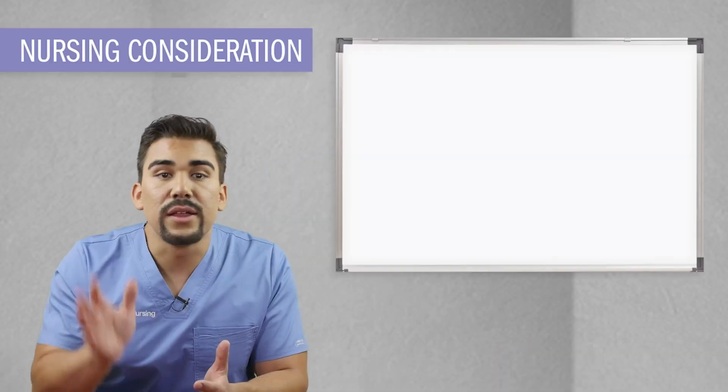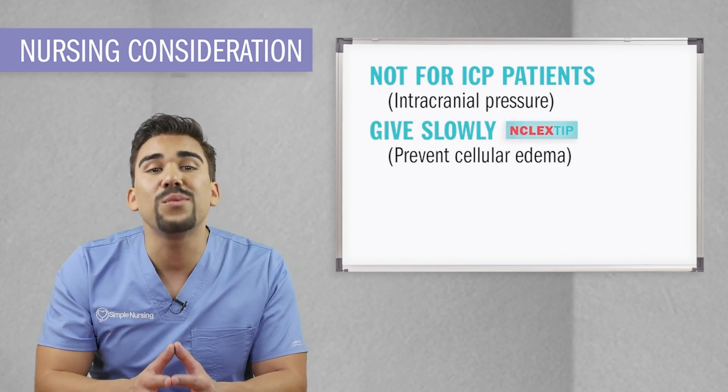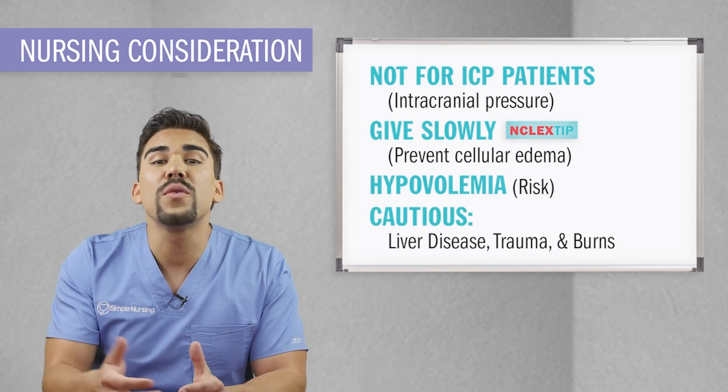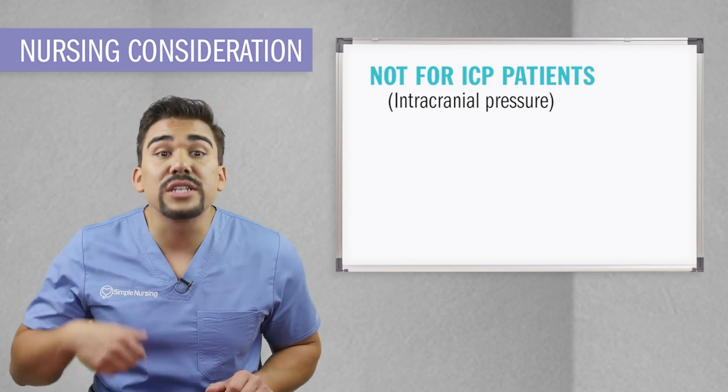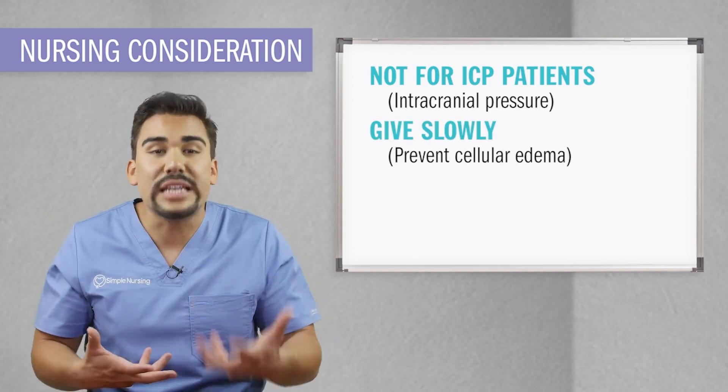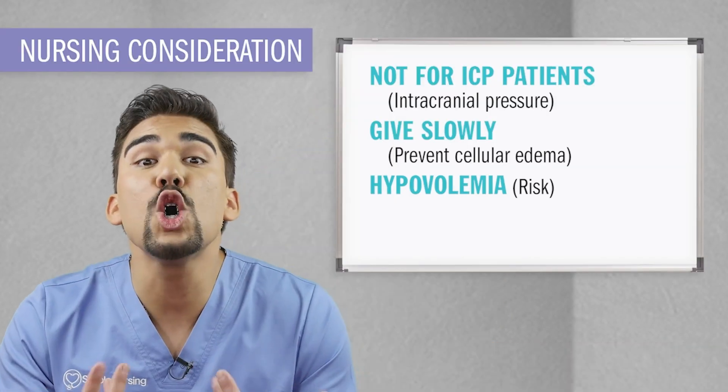Key nursing interventions when using hypotonic solutions: Never give for ICP patients. Infuse slowly, not rapidly. Watch out for hypovolemia signs and symptoms. Since hypotonic solutions draw more fluid into the cells from surroundings, giving them to ICP patients will increase intracranial pressure and increase brain swelling, leading to brain damage. All hypotonic solutions should be administered slowly to prevent cellular edema.